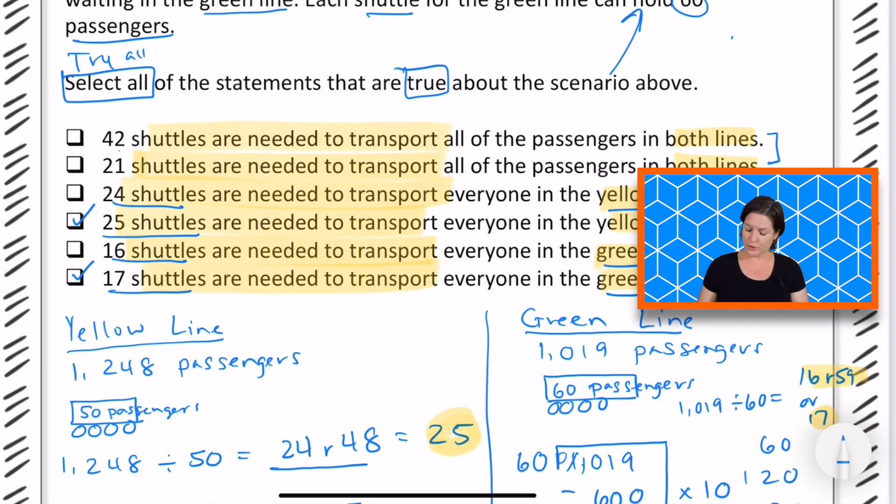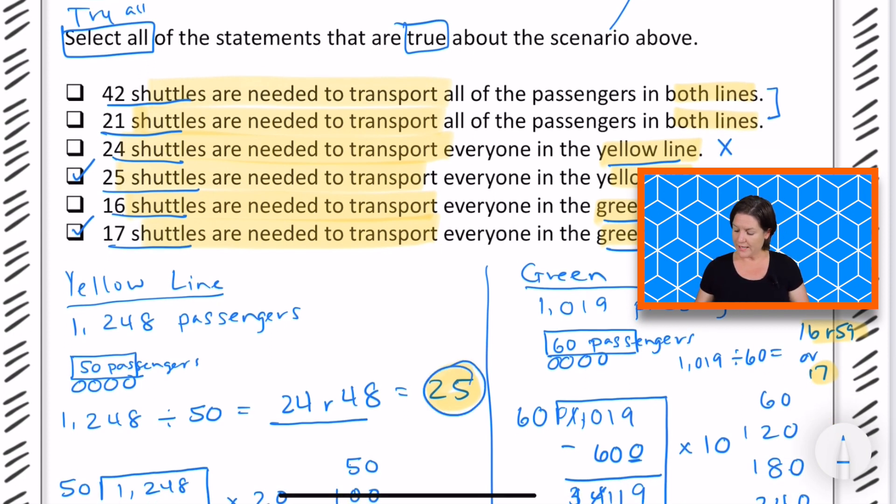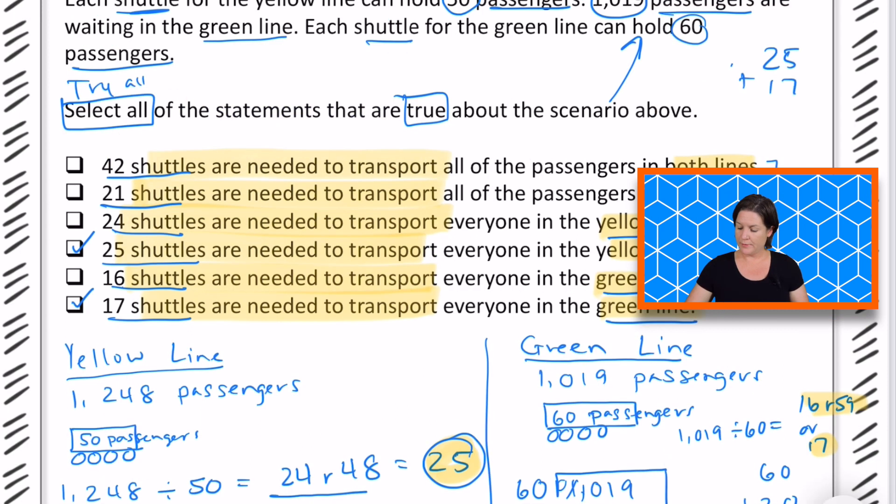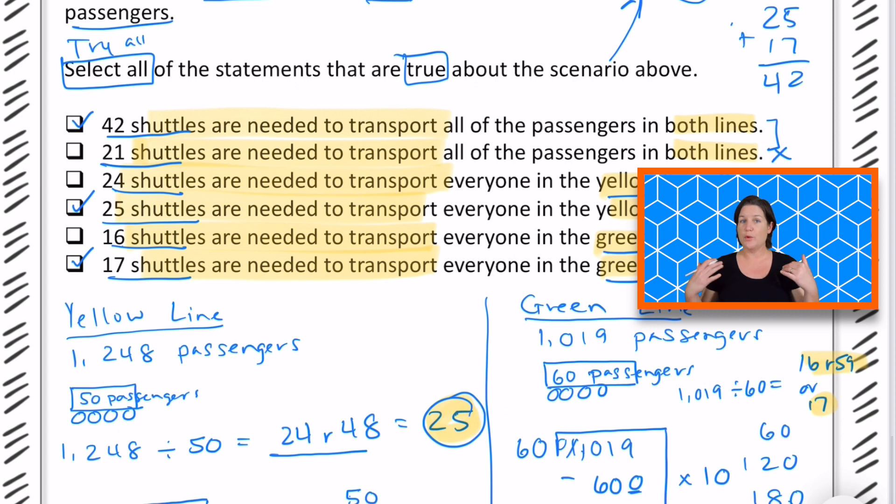Now let's go back to the first two answer choices. We have 42 shuttles and 21 shuttles to transport all of them. So that would be combining 25 and 17, which would be 42 shuttles that are needed in all. So we can go ahead and mark that first one and eliminate right there. I know that was a lot of work, so if you need to rewind and go back and get any of the notes done, that is the power of having a video lesson is that you can rewind. So go ahead and make sure you have these notes copied, and if you know that you need more help with division, I'm going to point you in the right direction right now.